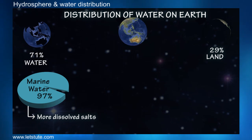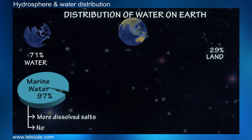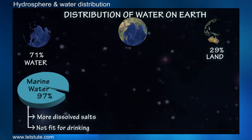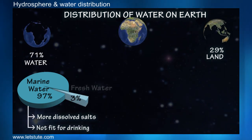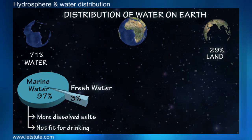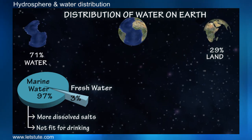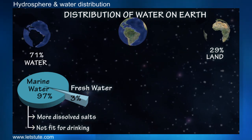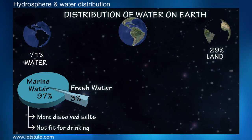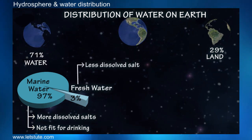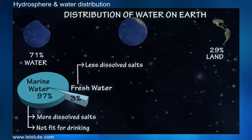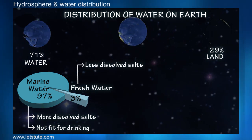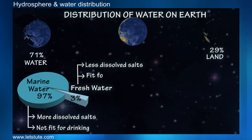We call this water marine water or saline water, as it has a large amount of dissolved salts, and so it is not fit for drinking. The remaining 3% is fresh water — we call it fresh water because the dissolved salt content is very less, and that is the reason why it is fit for drinking.